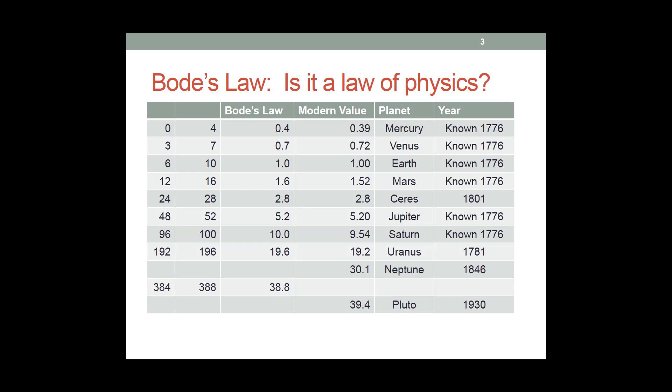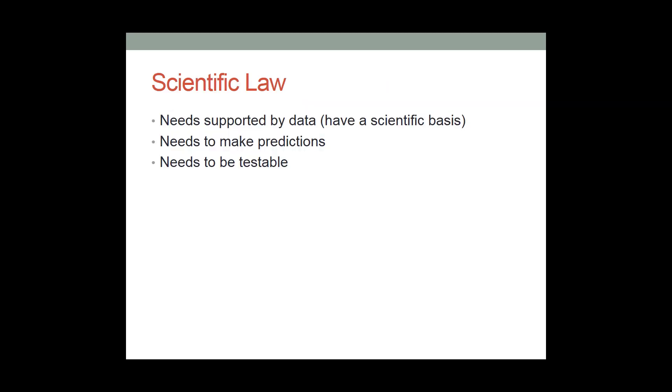So now, let's think about three possible criteria. In order for something to be a scientific law, to be a law of physics, it needs to meet three points. So it needs to be supported by data, meaning it has to have a scientific basis. It needs to be able to make predictions. And it needs to be testable.